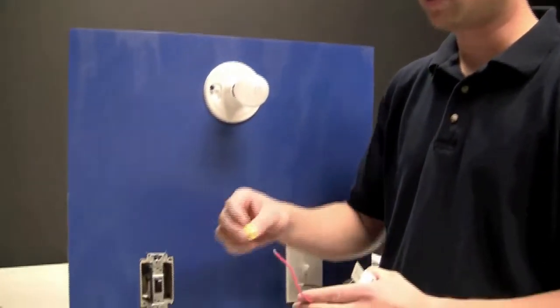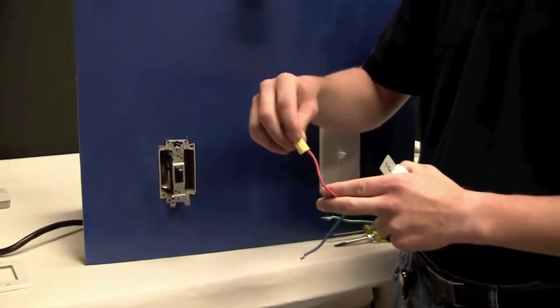Now let's get started. Since this is a single-pole installation, we're going to locate the red wire on the timer and place a wire nut on it as it is not used in this application.